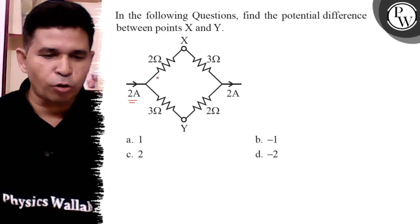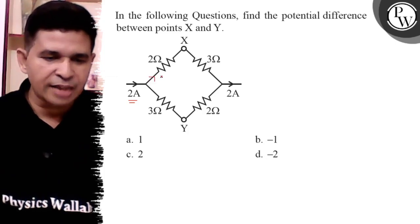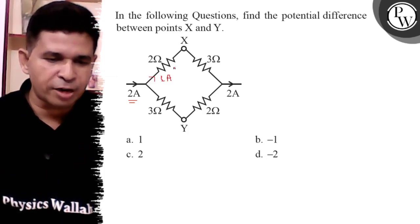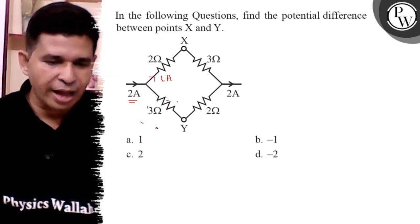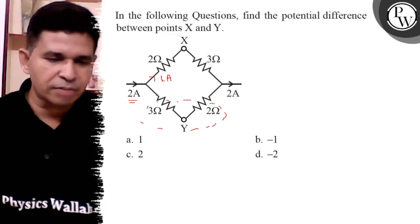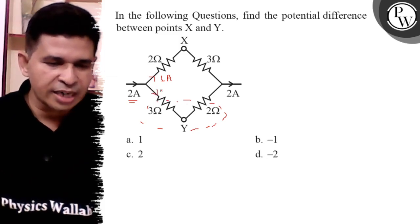Here the 2 ampere current is flowing. In that branch, 1 ampere is flowing because it also has the 5 ohm resistance. Same resistance is there, so current is equally divided, 1 ampere each.